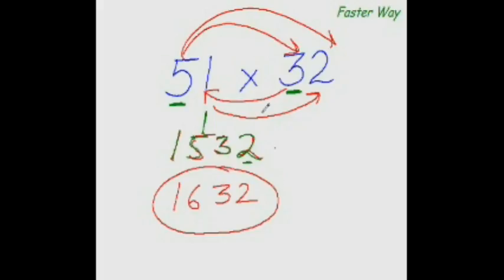Like some things are easier said than done, this is one thing which is easier done than said. All you need to do is remember this arrow pattern and everything else will take care of itself. That is: multiply the first digit of this number with the first digit of this number and write the product here.